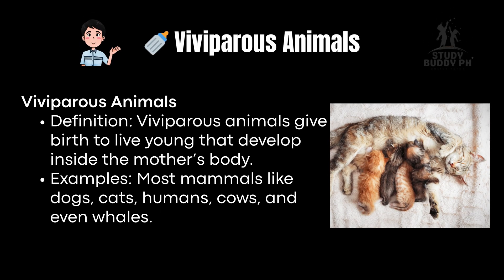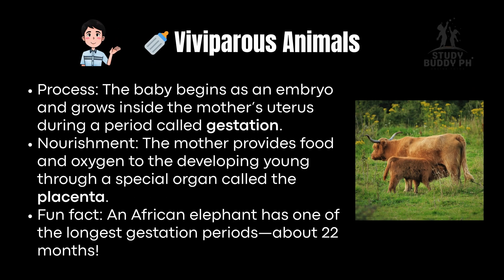Viviparous animals give birth to live young that develop inside the mother's body. Examples include most mammals like dogs, cats, humans, cows, and even whales. The baby begins as an embryo and grows inside the mother's uterus during a period called gestation. The mother provides food and oxygen to the developing young through a special organ called the placenta. Fun fact: an African elephant has one of the longest gestation periods — about 22 months.